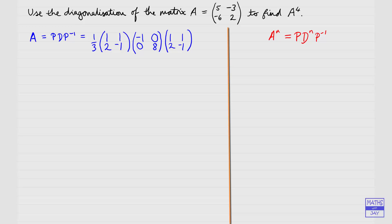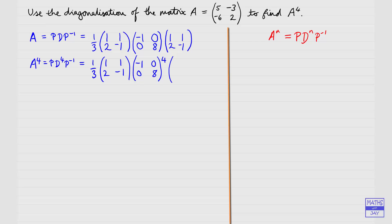In this case we're looking at A to the power of 4, so that's going to be P times the matrix D to the power of 4, multiplied by the inverse of P. The factor of one third stays out front, the first matrix P stays as it was, then we raise D to the power of 4, and the matrix P^(−1) at the end stays the same as well.